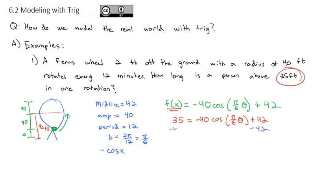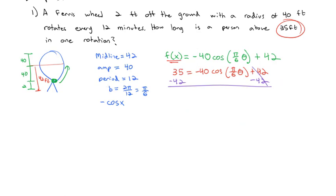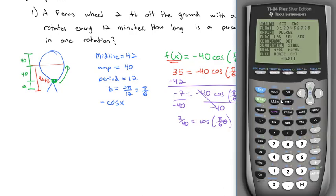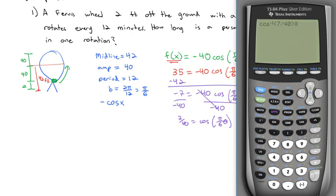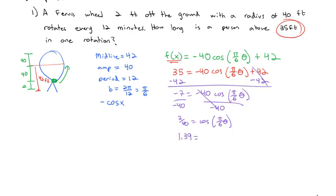We'll subtract 42 from both sides, trying to get the cosine alone. That'll give us -7 equals -40cos(π/6·θ). Divide both sides by the negative 40, and that makes it a positive 7/40 equals the cosine of π/6·θ. So going to our calculator then, making sure I'm in radian mode, because we used 2π for the B, so we need to come down here. It is in radians, good. And we'll do the cosine inverse of 7/40, and we end up with 1.39.